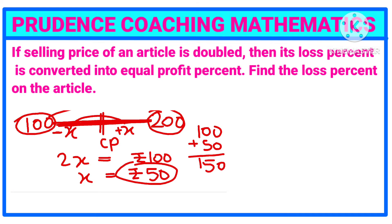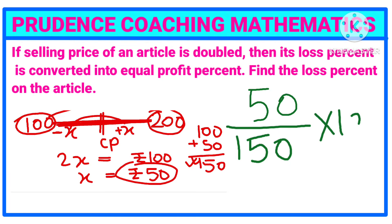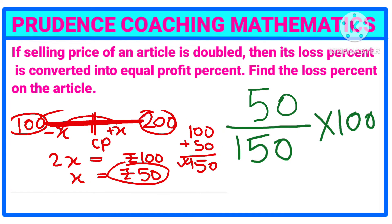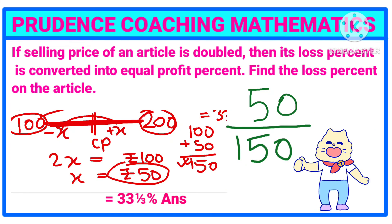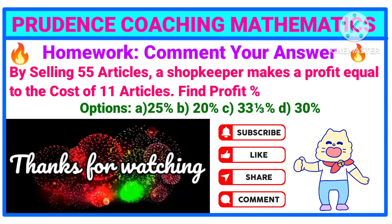Now, to find the loss percentage: the loss amount is 50 rupees. Loss percentage is always calculated on the cost price, which is 150 rupees. So loss percentage equals 50 divided by 150, multiplied by 100. Simplifying, 50 over 150 gives 1 by 3, so 1 by 3 into 100 equals 33 and 1/3 percent. This is our final answer.